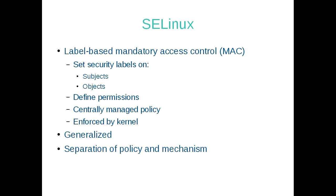This is probably going to be the shortest presentation on SELinux ever. In the context of this talk, what's important to note is that it's a label-based mandatory access control system. By label-based, we put security labels on all the objects and subjects in the system — the subject typically being a process and an object being something the process acts on, such as a file or another process. We define permissions about how these interact based on those labels, which becomes the policy. This policy is centrally managed by an administrator, which is what makes it mandatory, and it's enforced at the kernel level.